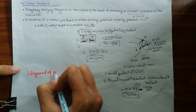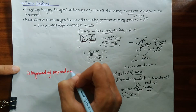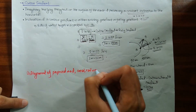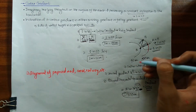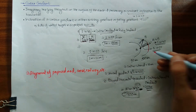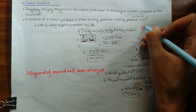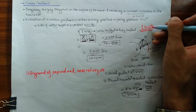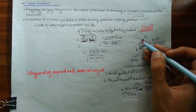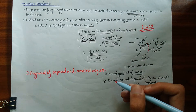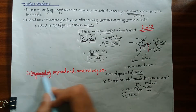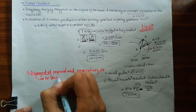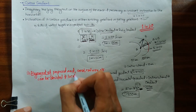Now, why do we need contour gradients? Contour gradients are really useful when we are doing the alignment of proposed roads, canals, railways, etc. If a proposed road requires a gradient of 1 in 20, we draw our contour gradient accordingly. By drawing our contour gradient, we can decide and locate the alignment of the proposed road, canal, or railway using our contour lines.